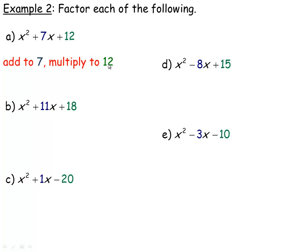So look at the factors of 12 first, and then find the ones that add to 7. The numbers that multiply to 12 are: 1 and 12, 2 and 6, or 3 and 4. The ones we need are 3 and 4 because they add to 7 — 2 and 6 doesn't, 1 and 12 doesn't. So 3 and 4 multiply to 12 and add to 7, satisfying both conditions. Therefore the factors would be x plus 3 and x plus 4.